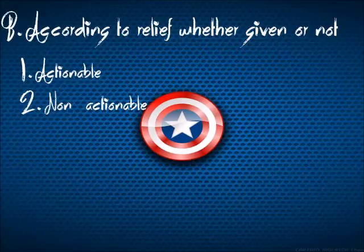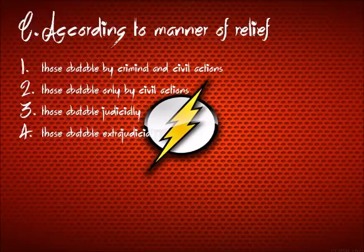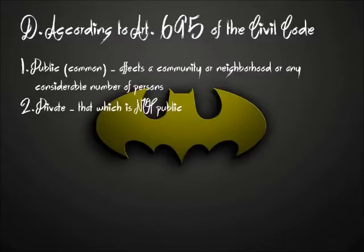The second classification is according to relief, whether given or not — it could be actionable or non-actionable. The third classification is according to the manner of relief: those abatable by criminal or civil actions, those abatable only by civil actions, those abatable judicially, and those abatable extrajudicially. The last classification, according to Article 695 of the Civil Code, is public — nuisance that affects the community, neighborhood, or any considerable number of persons — or private, which is nuisance that is not public.